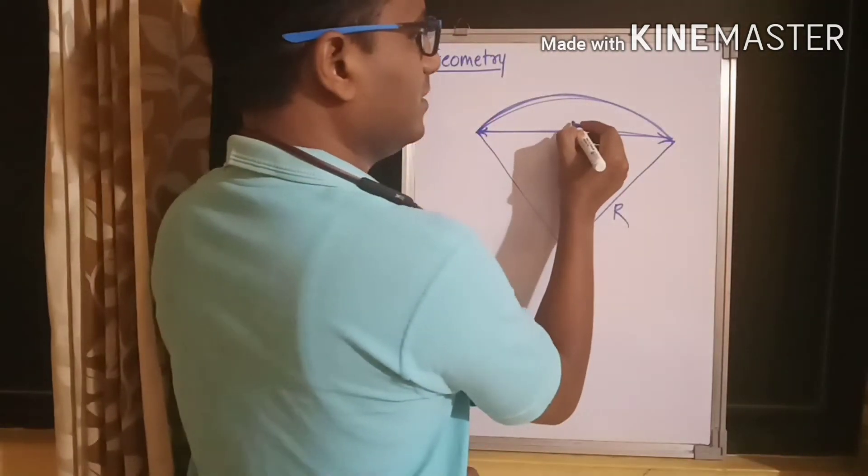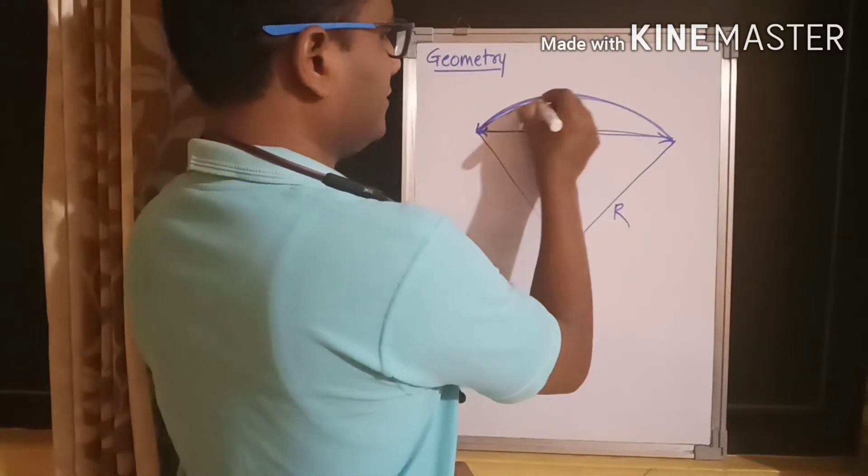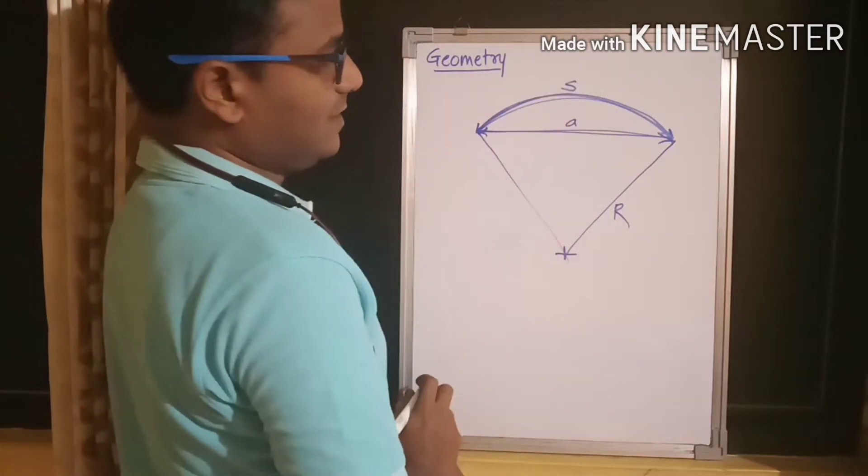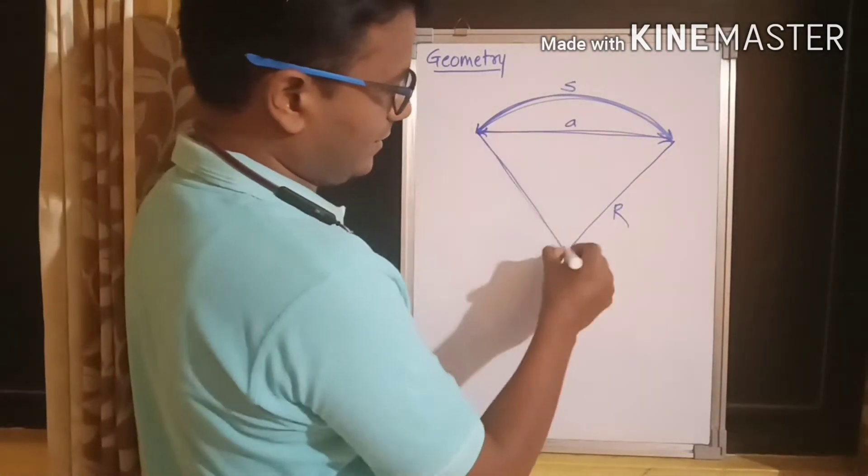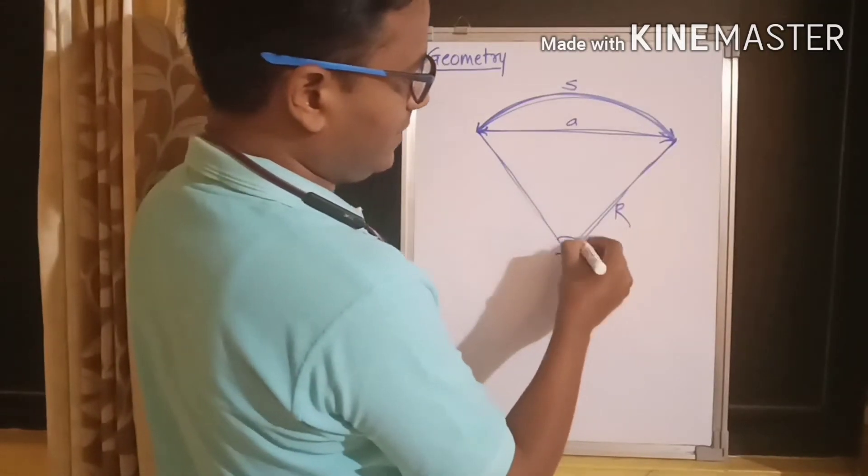And this one is the chord. This is the chord length. Say, I denote chord length by a. And this is the arc length. Say, I denote by s.